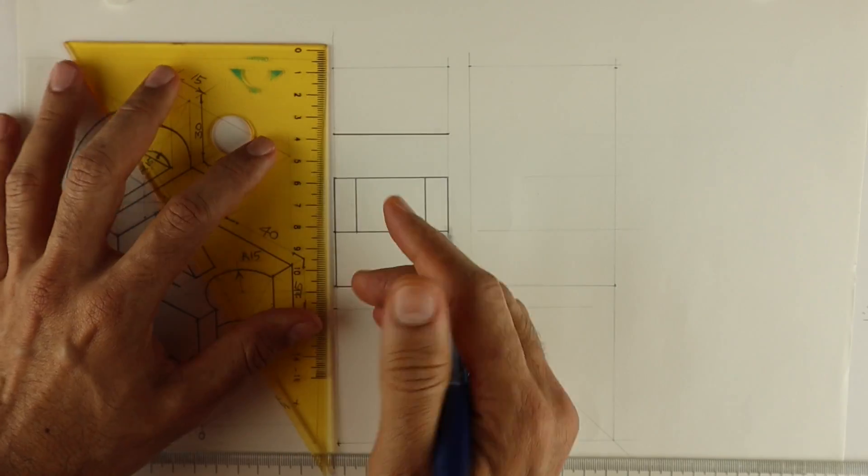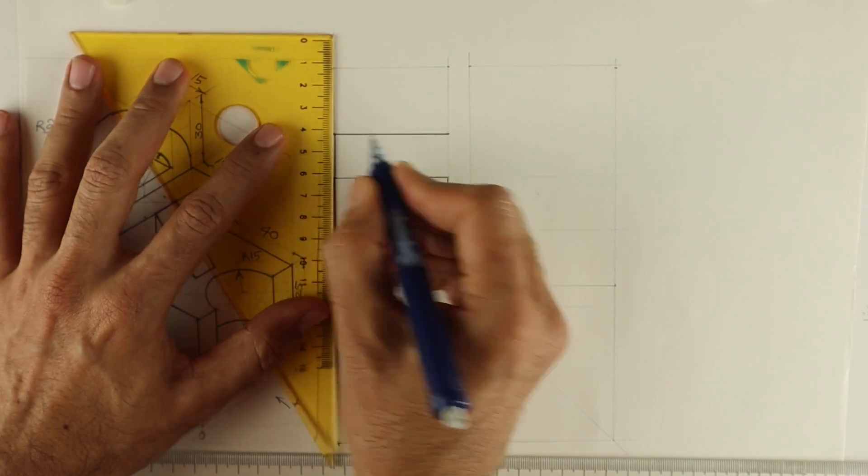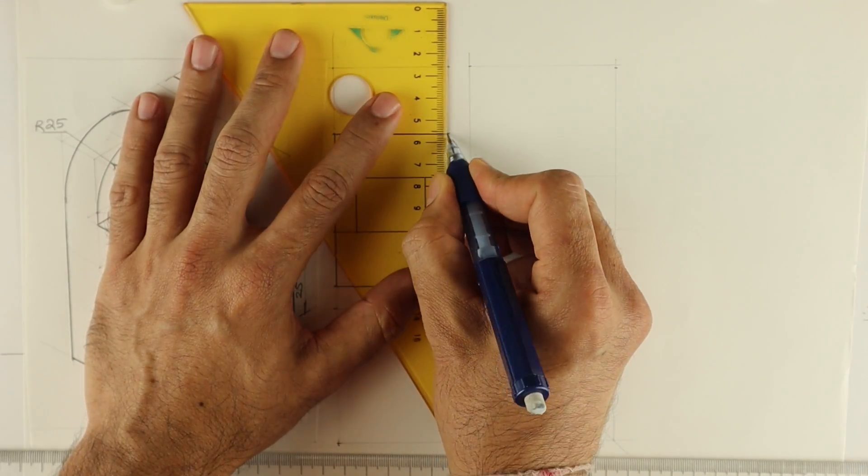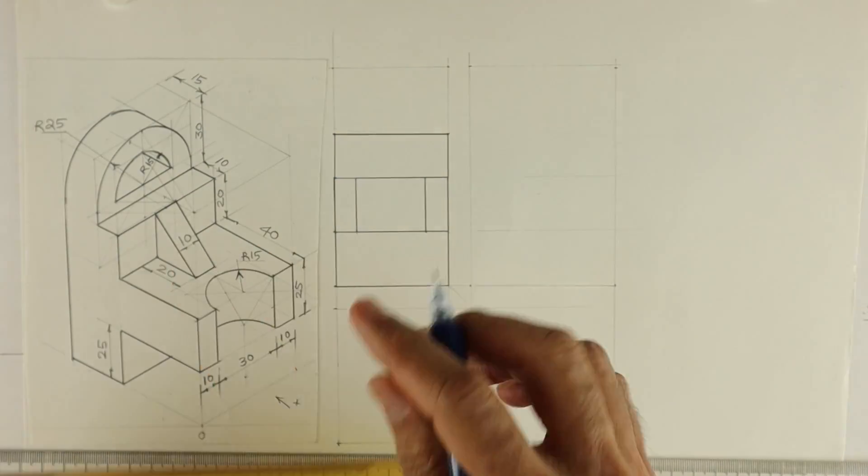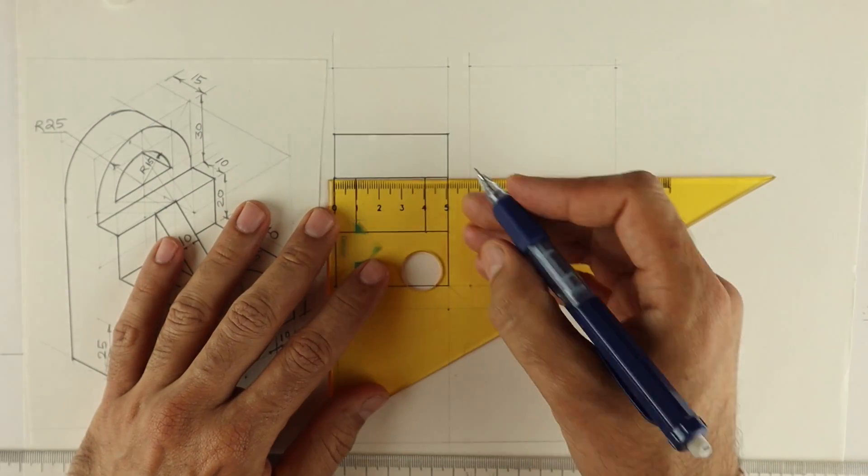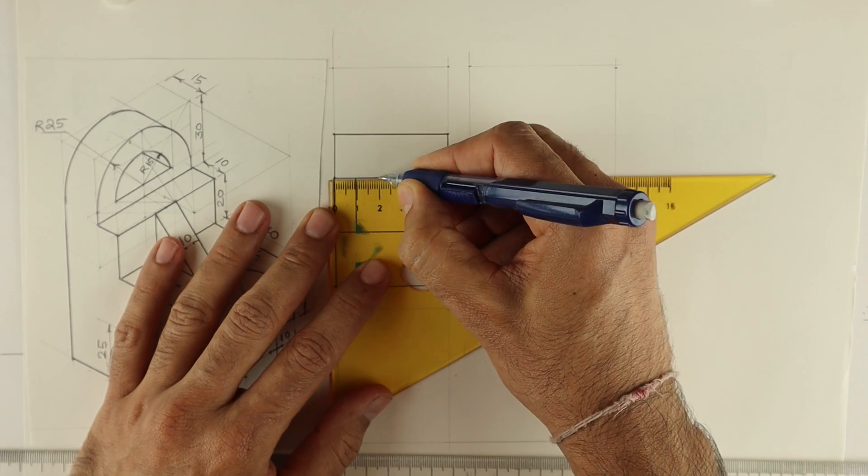See this. So what we can do, I'll take 20 from here, midpoint 10, 10.